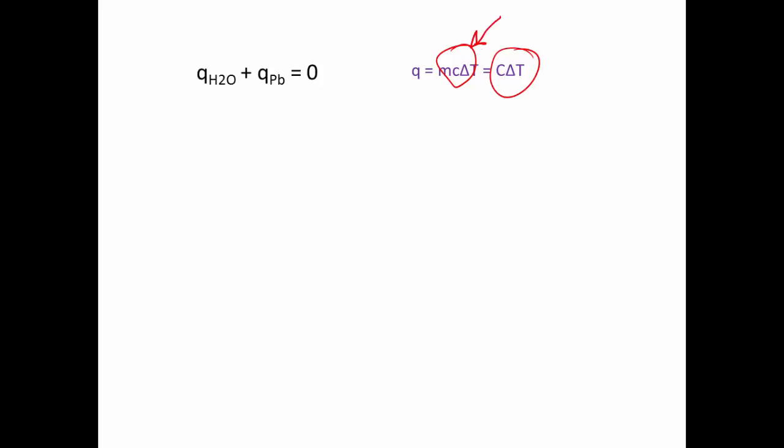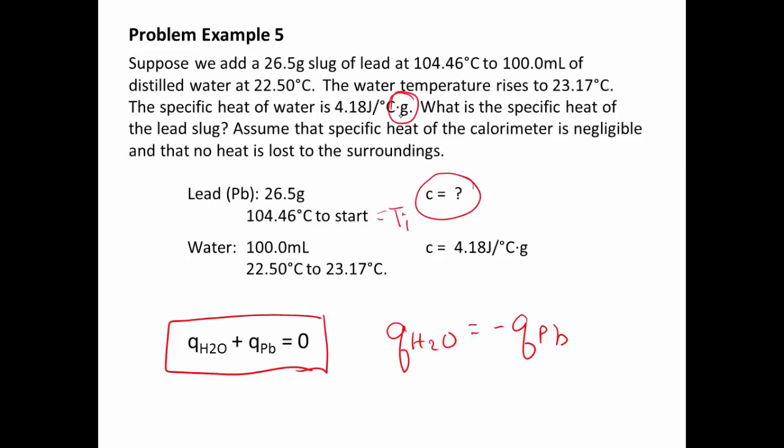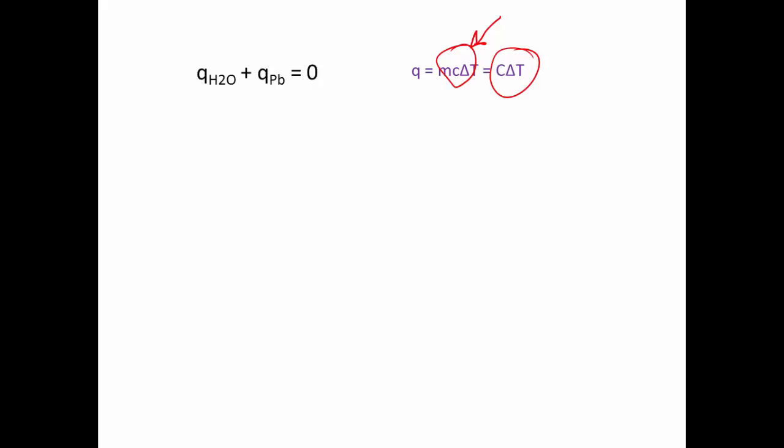Our hint for that is that our mass of the lead is given, so that's very helpful. Also with the water, we see that if we go back, specific heat of water has that grams in it. So we know we're going to use it for our water as well.